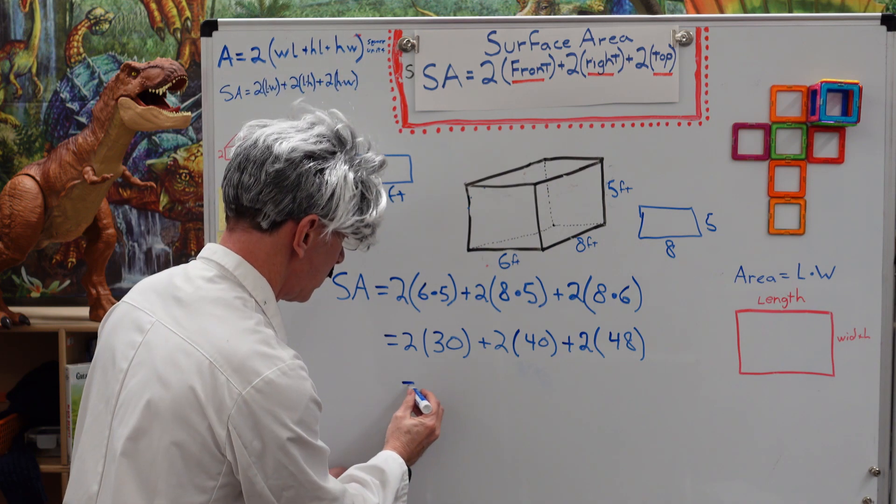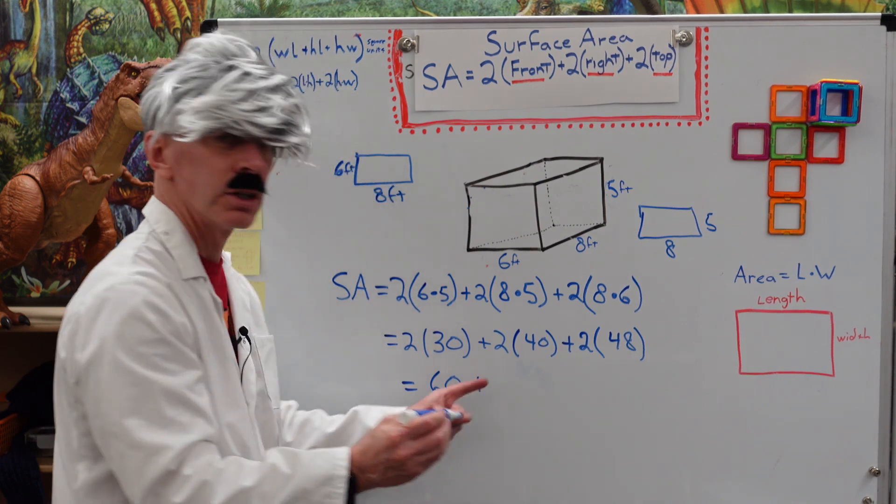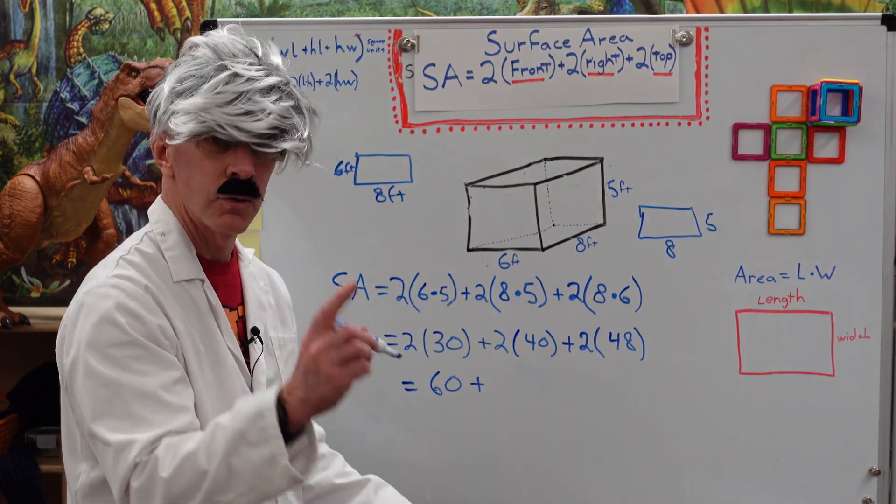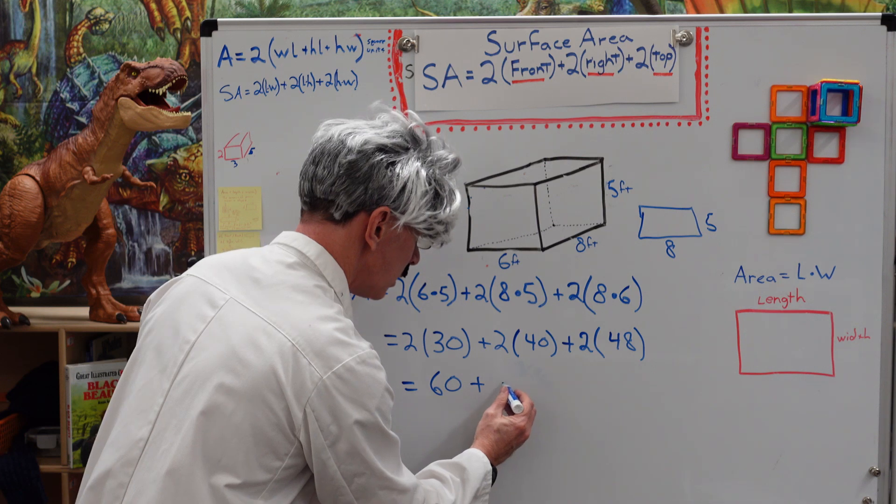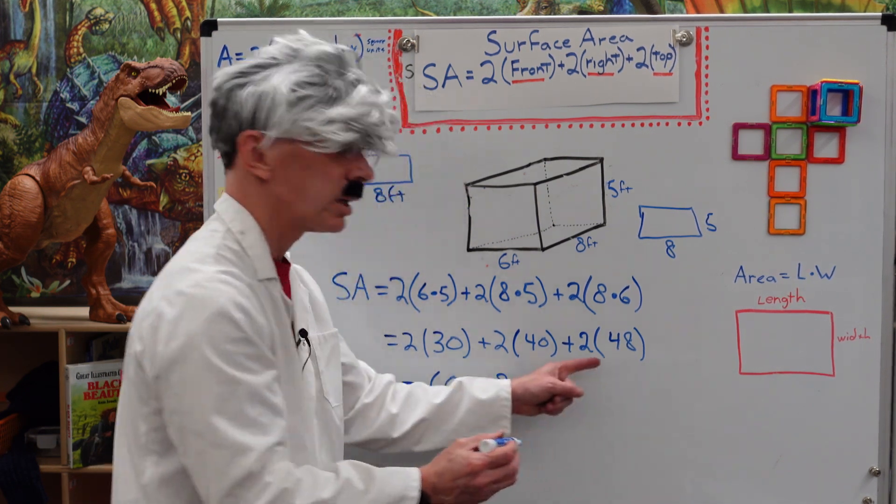2 times 30 is 60. Plus, 2 times 40. 4 plus 4 is 80. So, this is 80. Plus, 2 times 48.